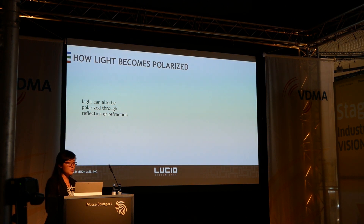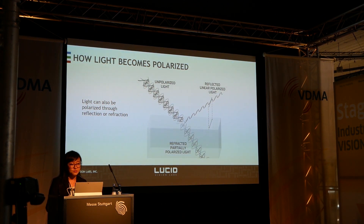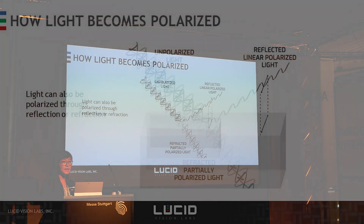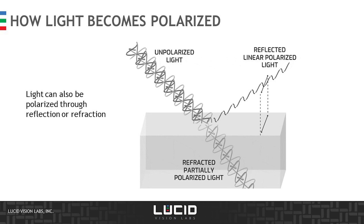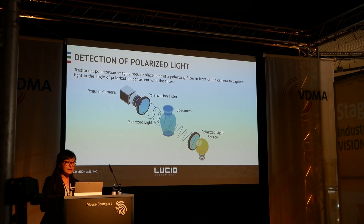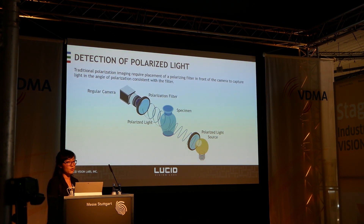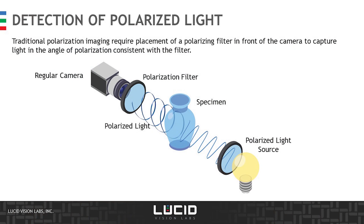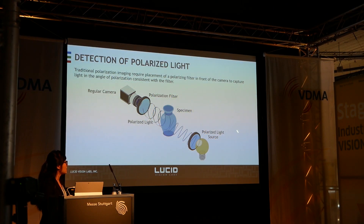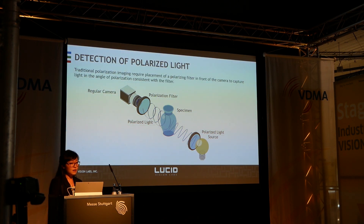There's also another phenomenon where light can be polarized — through reflection. When you have an unpolarized light hitting a flat surface and getting reflected, the reflected light will become linearly polarized in the direction of the surface. To detect polarized light in an imaging task, traditionally polarization imaging required placing a polarization filter in front of a regular camera to capture the light in the direction consistent with the filter. If you want to create polarized light, you need to put a polarization filter in front of the light source. In a typical imaging application, you would be passing the polarized light into the specimen and detecting the polarization of the outcoming light.